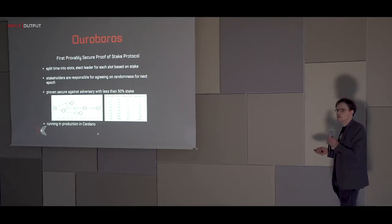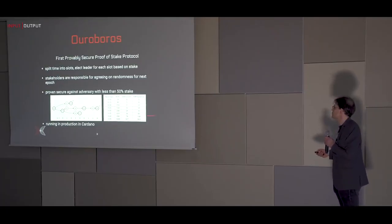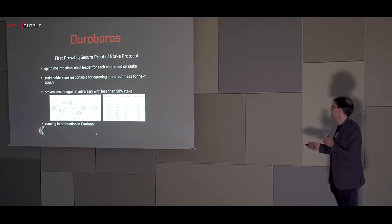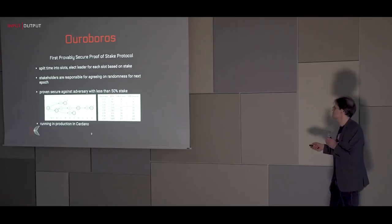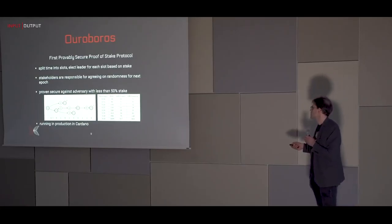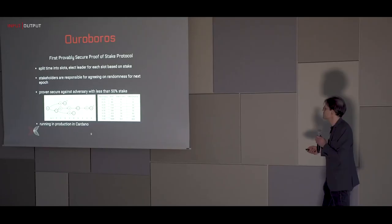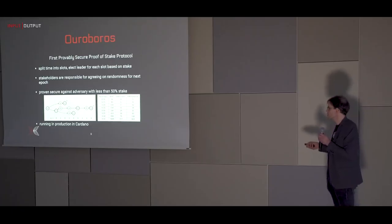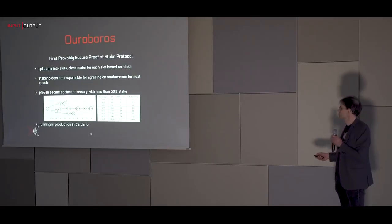One way to present the security results is a formal table: for a given adversary strength — fraction of hashing power for Bitcoin, or proportion of stake for Cardano — how many minutes must you wait after a transaction to be 99% sure it can't be reverted? For Bitcoin with 10% adversary hashing power, you wait 50 minutes. For Ouroboros it's 3 to 5 minutes. This is the first provably secure Proof of Stake protocol, and it is what is running in production in Cardano.